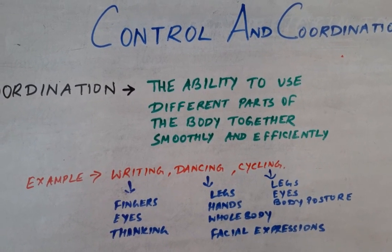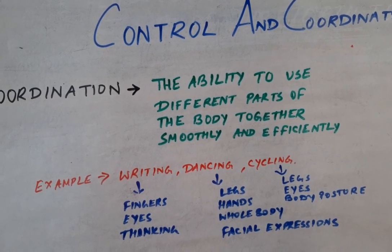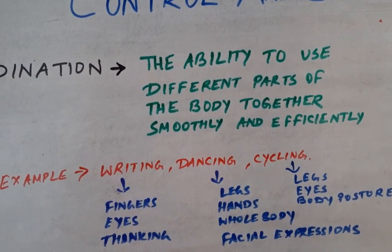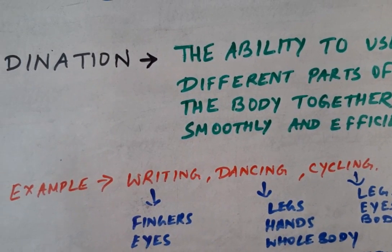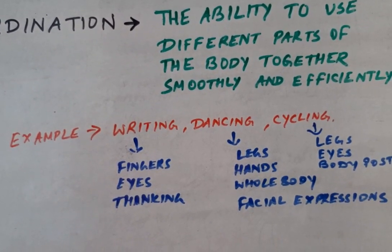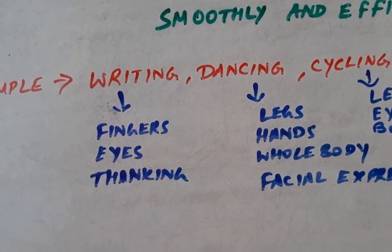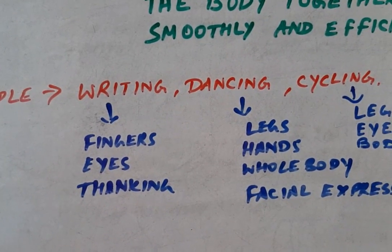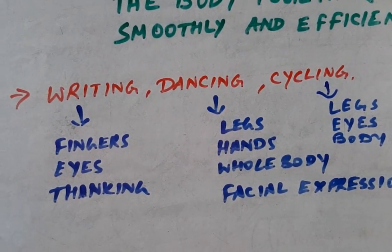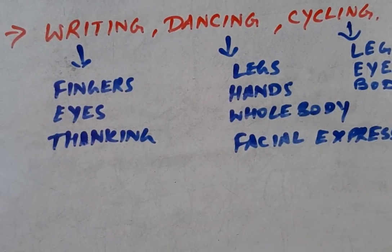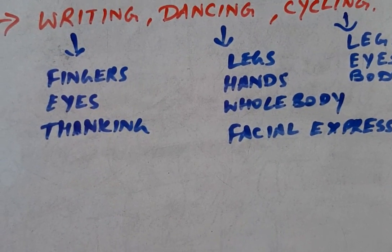Let me begin with the very definition of coordination. What do you mean by coordination? It is the ability to use different parts of the body together smoothly and efficiently. I am going to describe this definition with three examples that we perform very often: writing, dancing, and cycling.